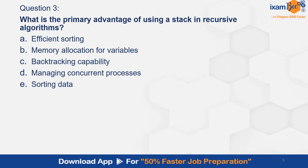Question 3. What is the primary advantage of using a stack in a recursive algorithm? Option A. Efficient sorting. B. Memory allocation for variables. C. Backtracking capability. D. Managing concurrent processes. E. Sorting data. And the correct answer is C — backtracking capability.